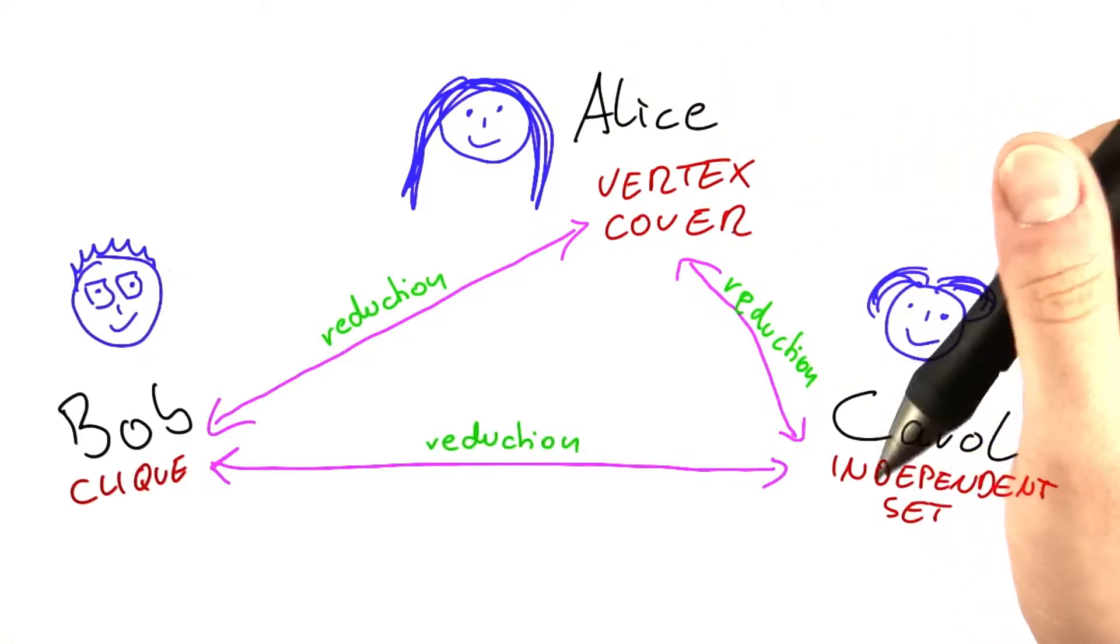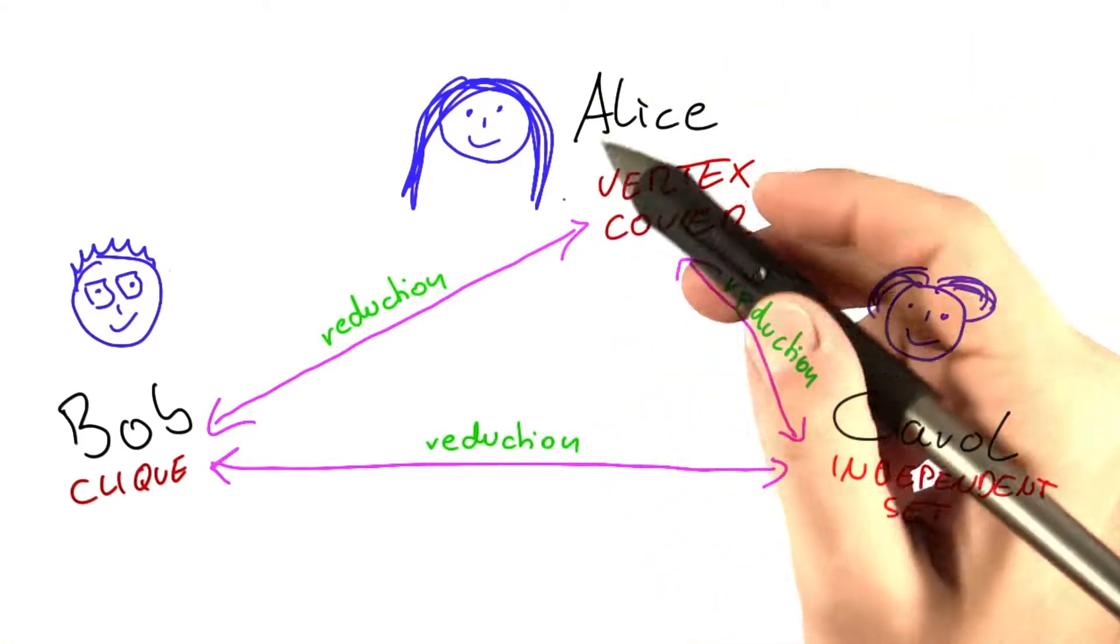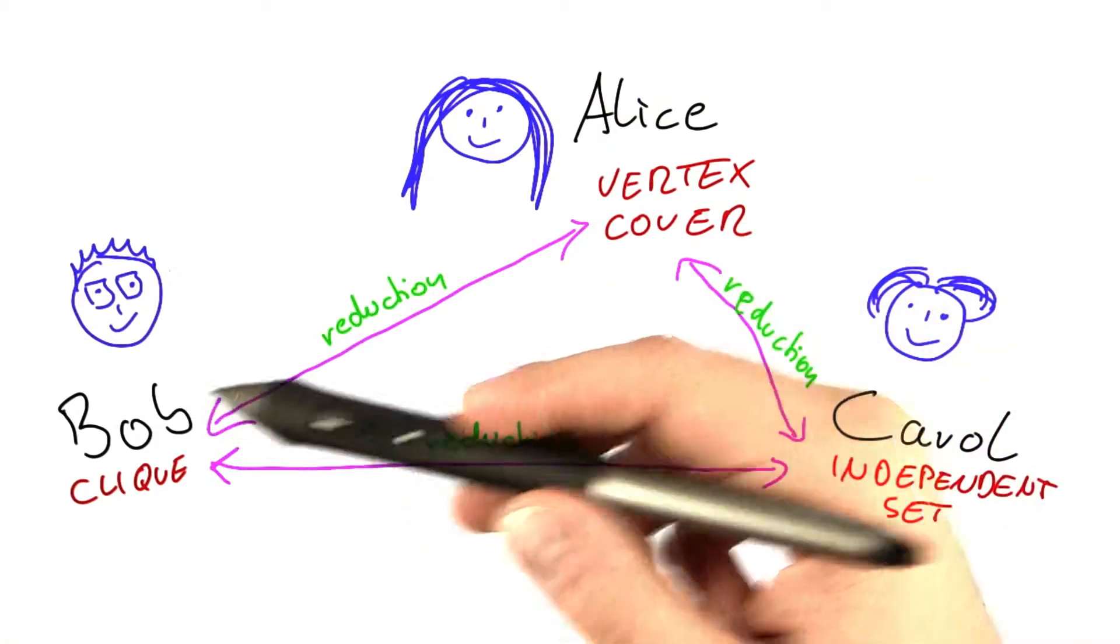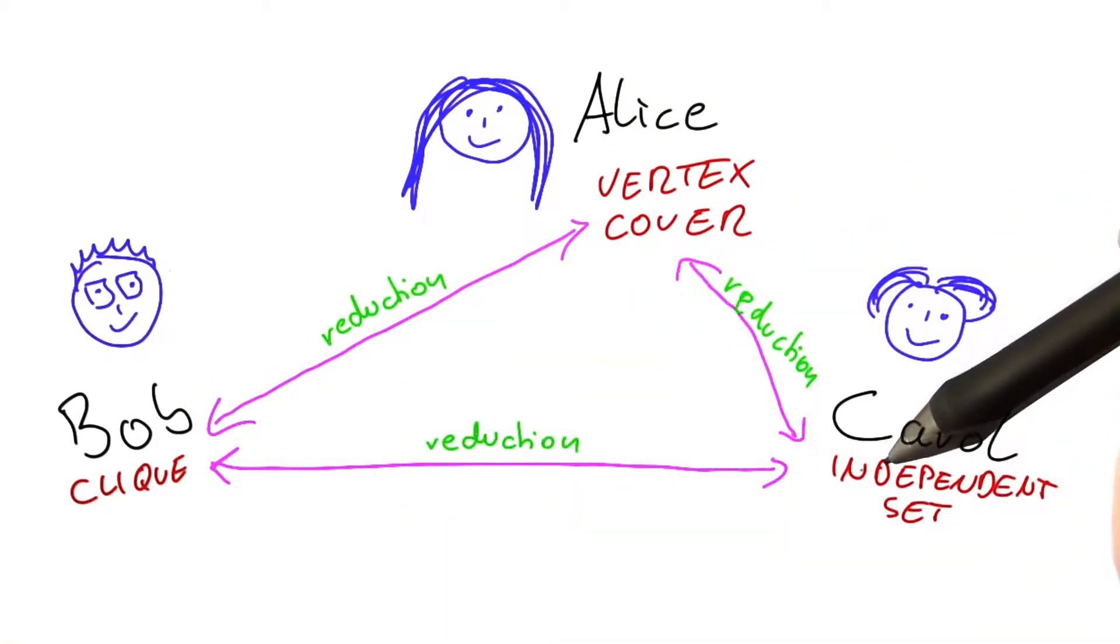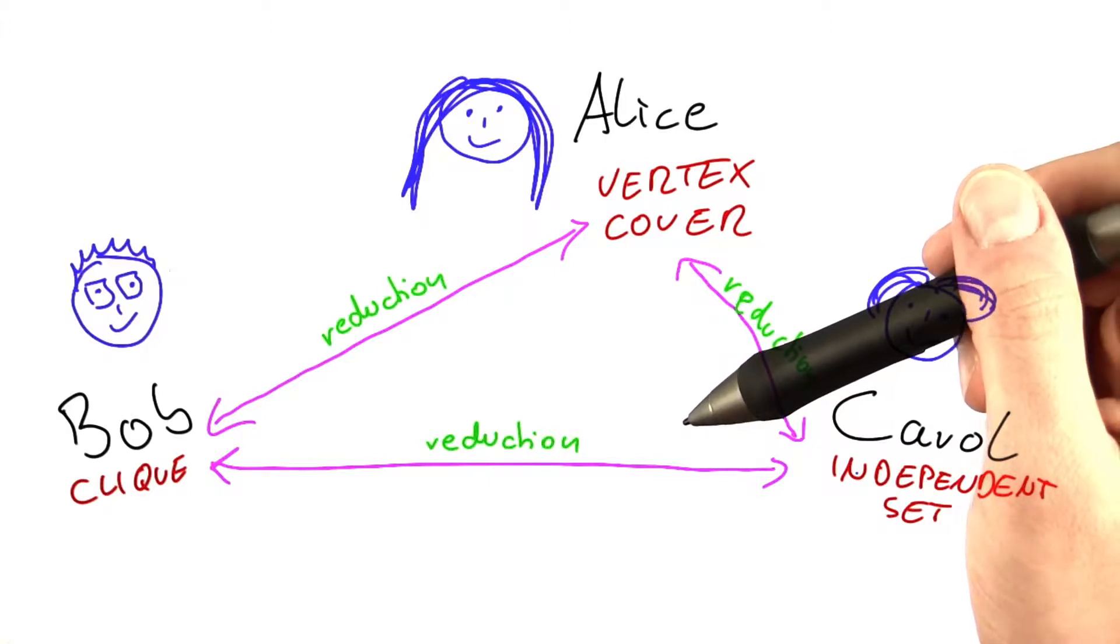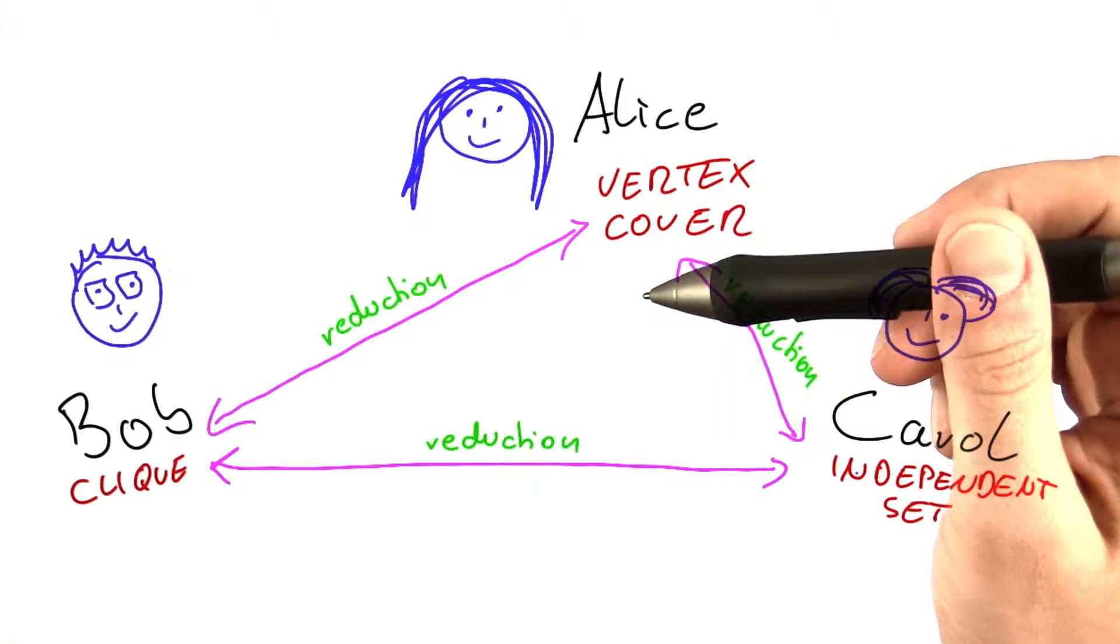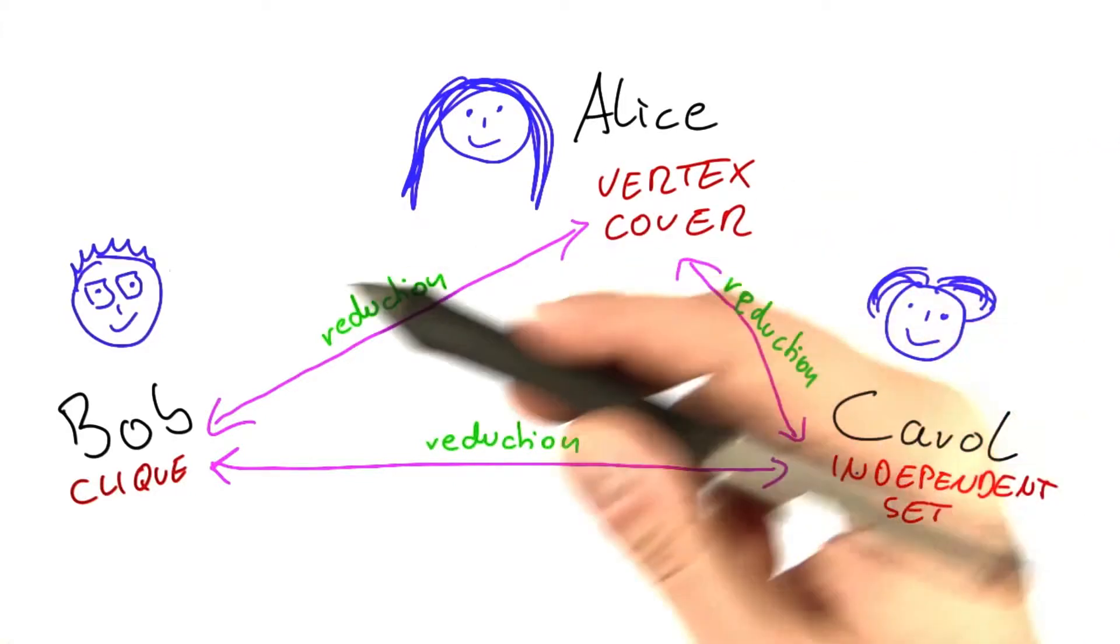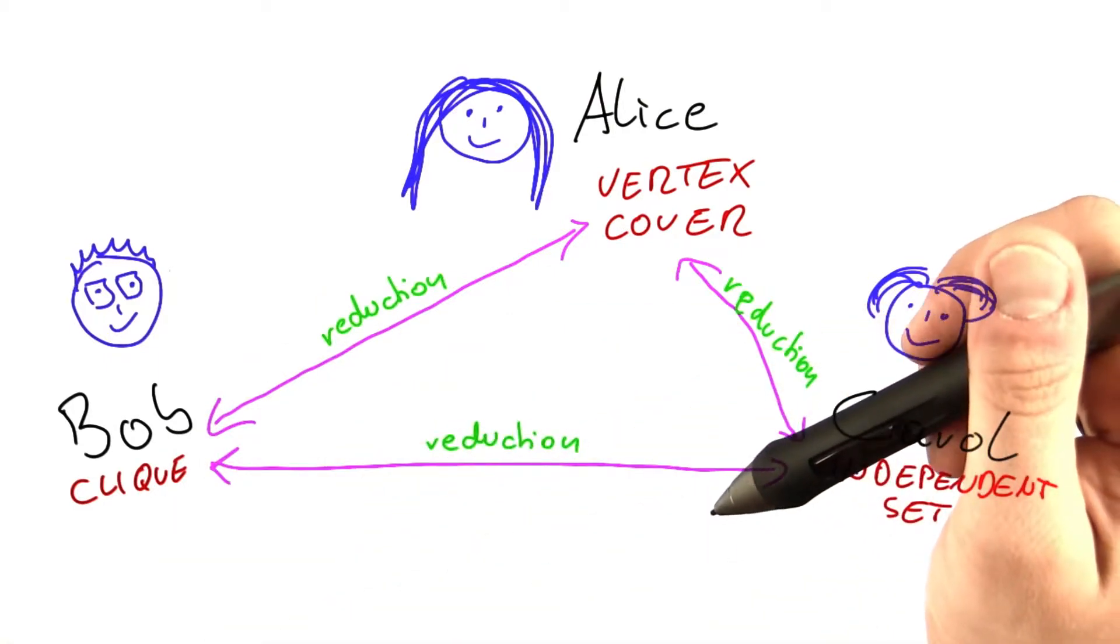Now back to our initial question, what does all of this mean for Alice, Bob, and Carol? We have already seen that the problems they are trying to solve are contained in NP. And so what we could now try is to show that their problems are actually NP complete.